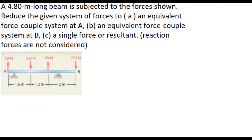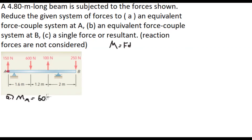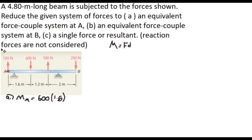For letter A, we need an equivalent force-couple system at A, meaning we treat point A as our reference point and get the moment. The formula for moment is: moment equals force times the perpendicular distance of the force. Before computing, let's establish our assumption: the moment at point A is positive if it goes counterclockwise.